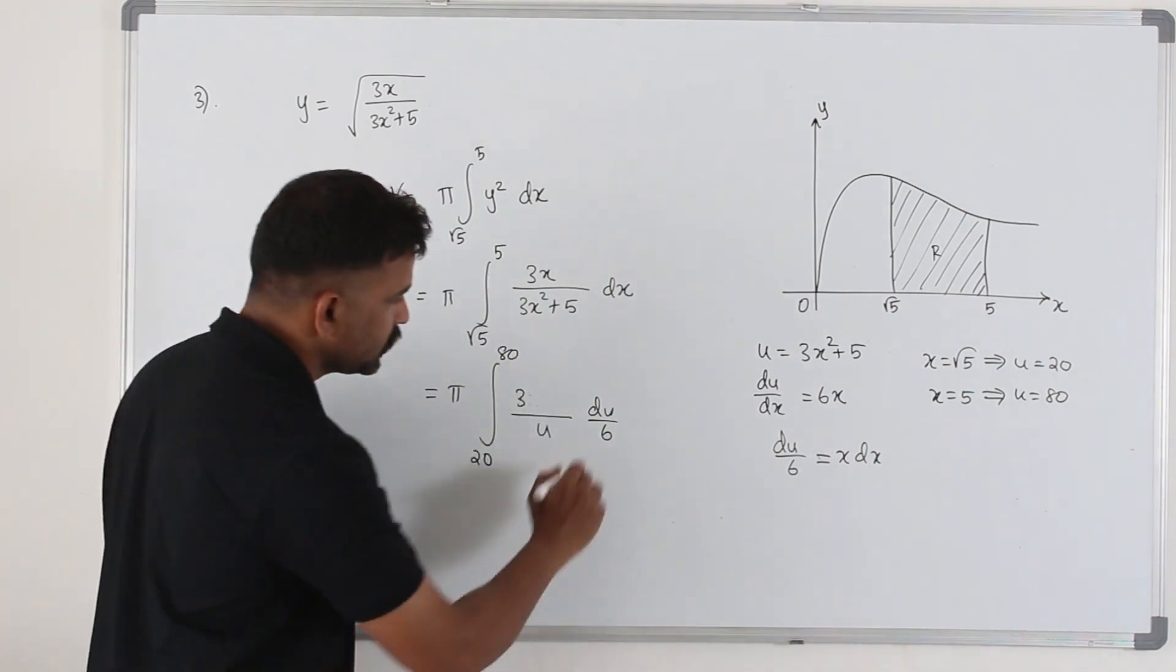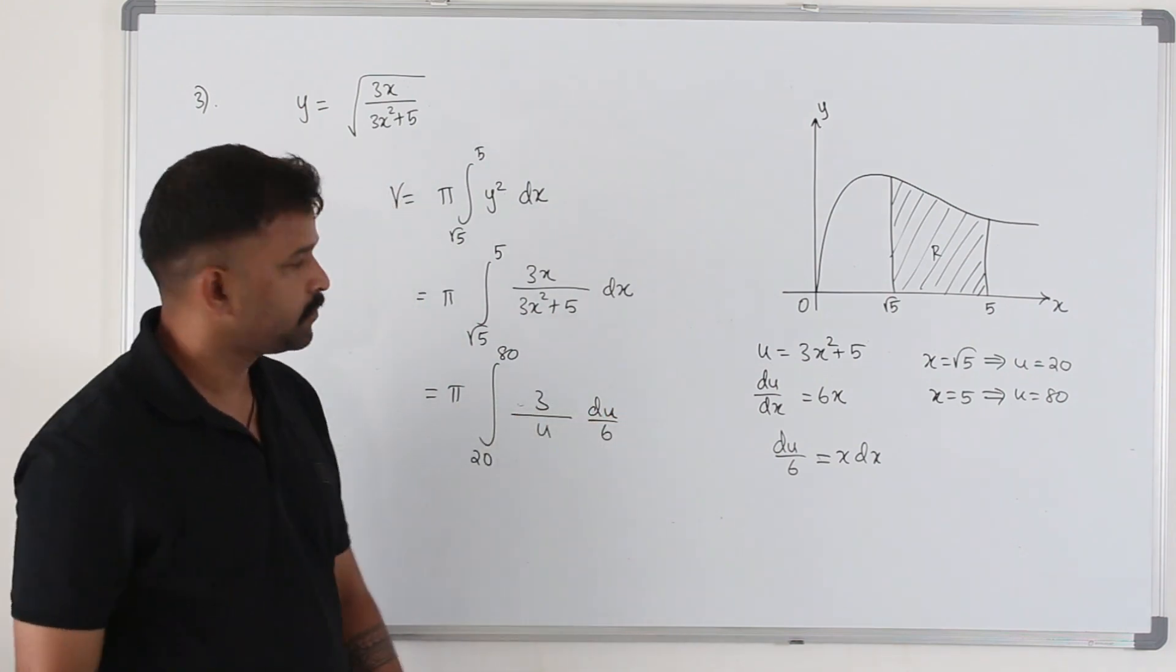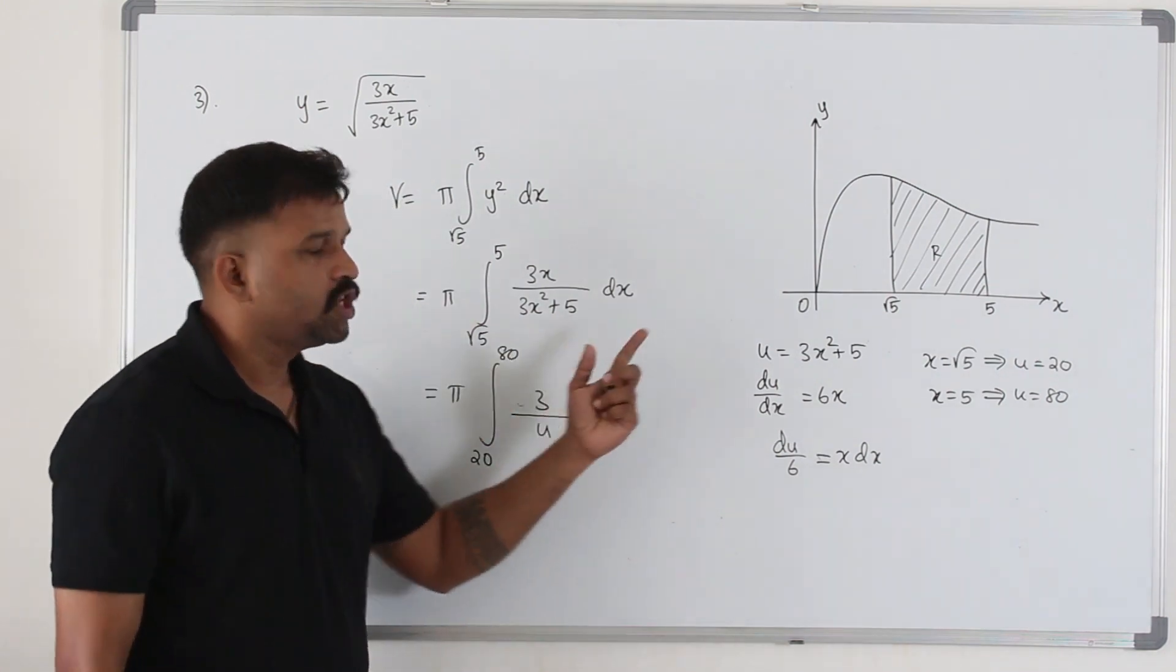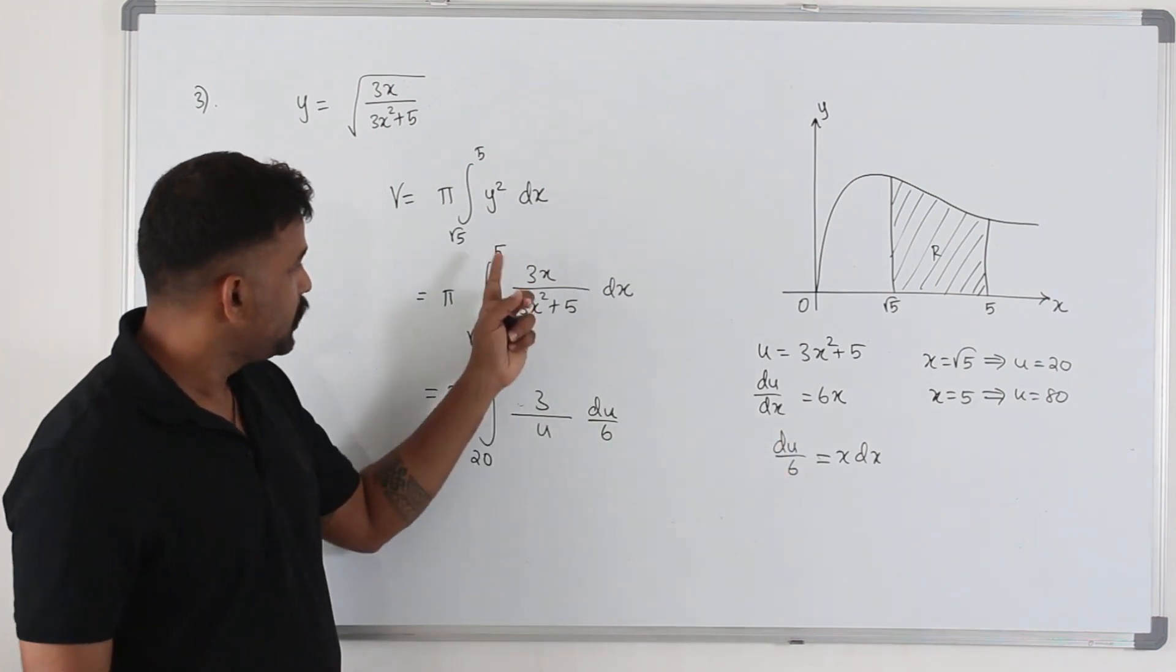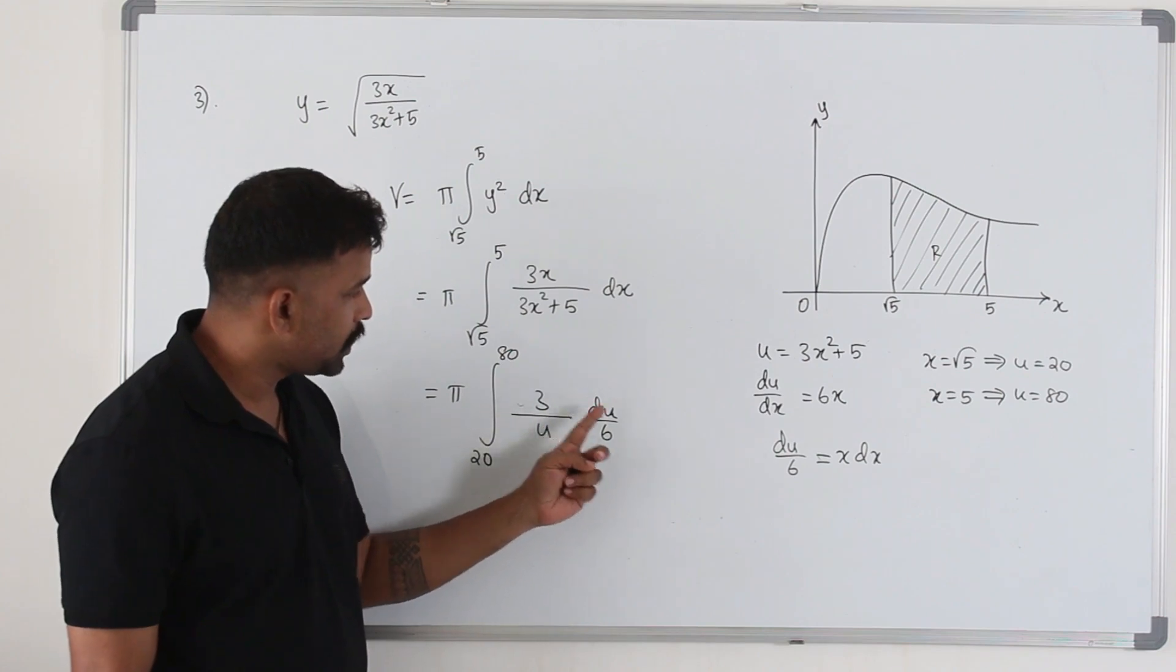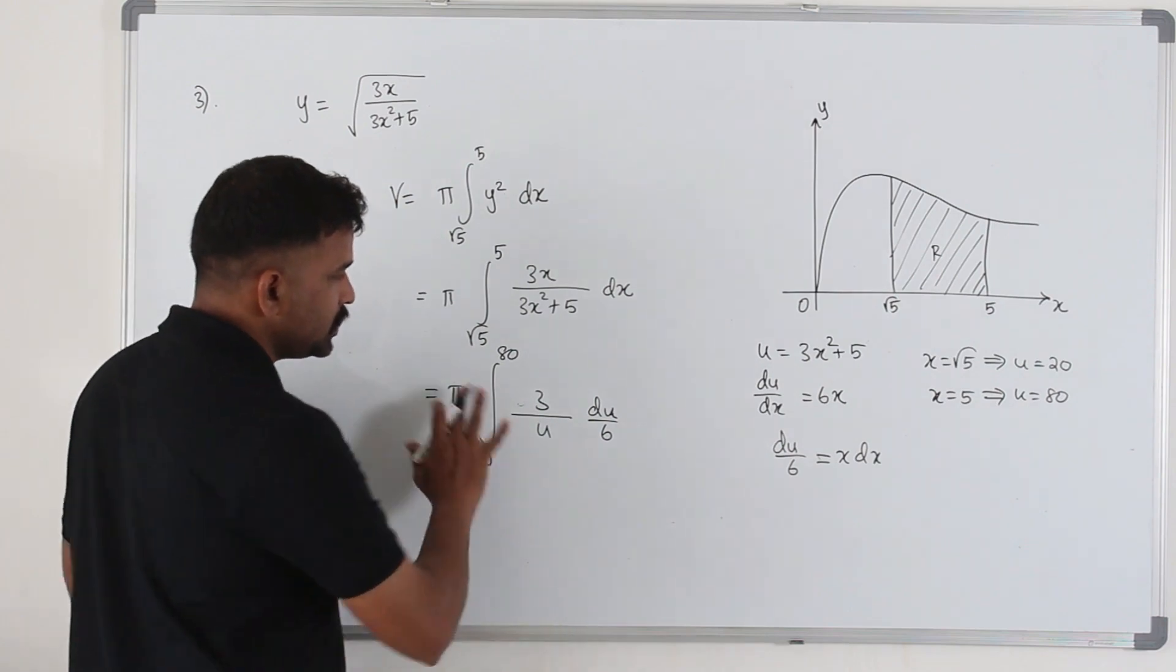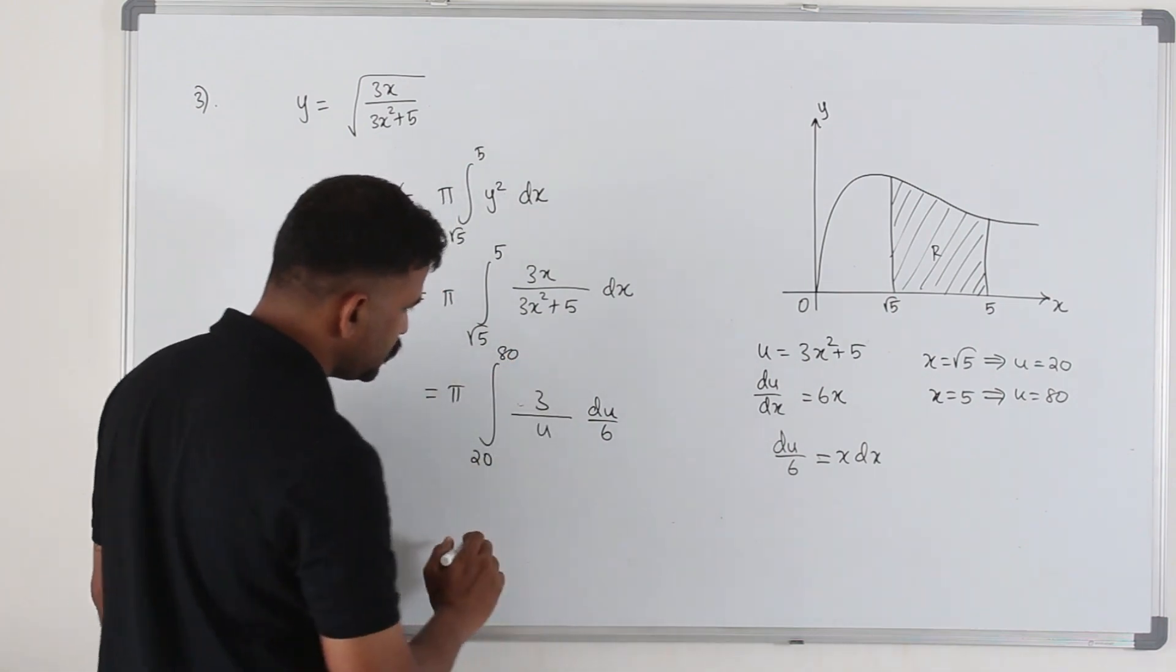This is 3 over u and du over 6. If you don't want to change the limit, you can keep the same limits. But in that case, after the integration, you have to replace u back to this and sub in the x limits. Here you don't need to do that. Just integrate straightaway, plug in the limits.